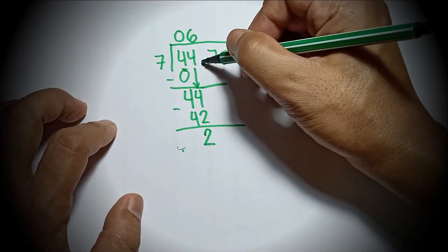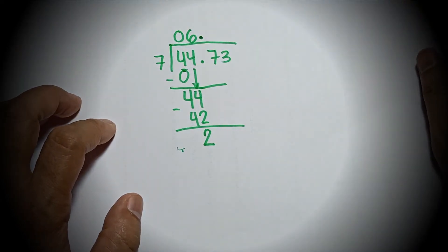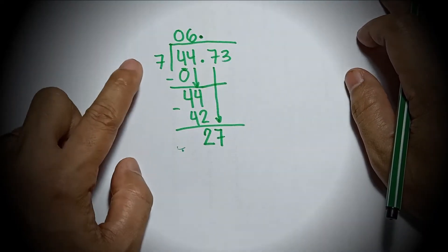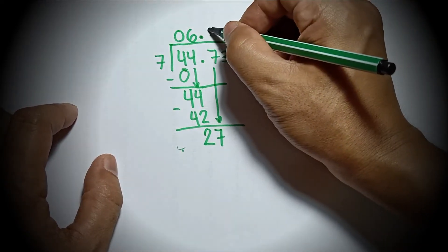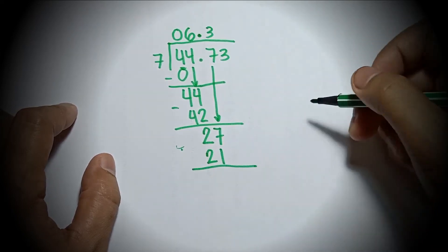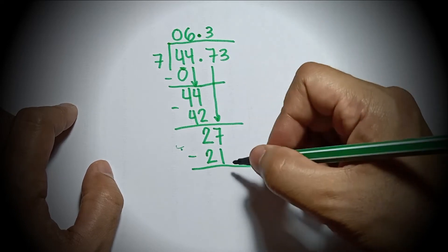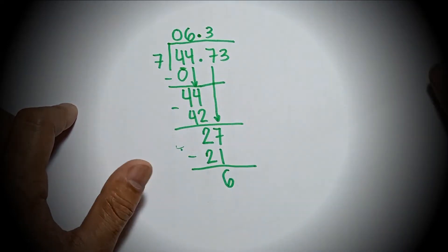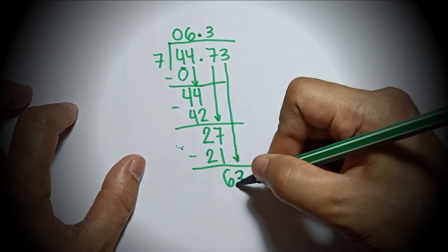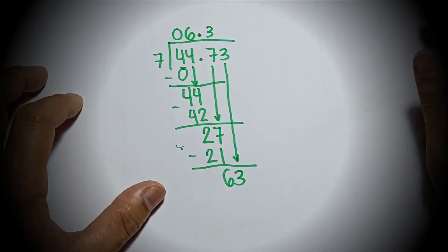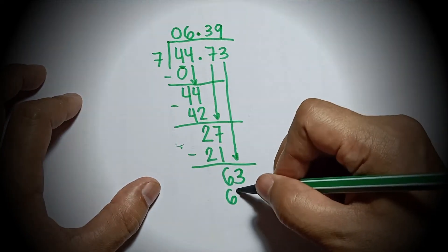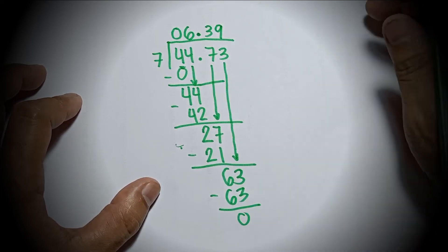Now put your decimal point directly on top of the dot. Then bring down 7, so now in 27, how many 7s can you make? You can make three 7s out of 27. So 3 times 7 is 21. Then 27 minus 21: 7 minus 1 is 6, and 2 minus 2 is 0. Then bring down 3, so it will become 63. How many 7s can you make from 63? You can make nine 7s. 9 times 7 is 63, and 63 minus 63 is 0.